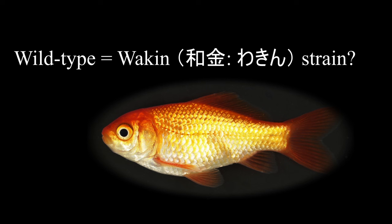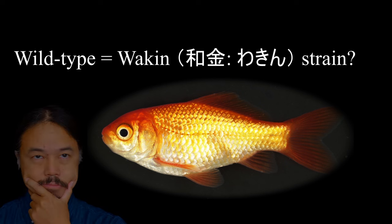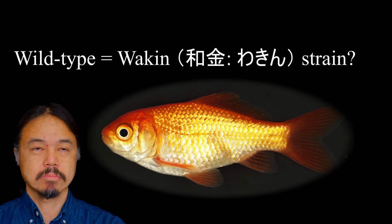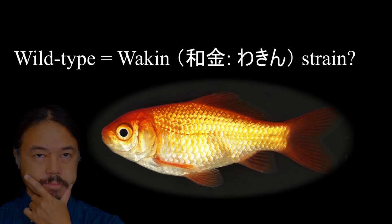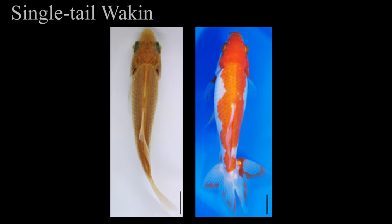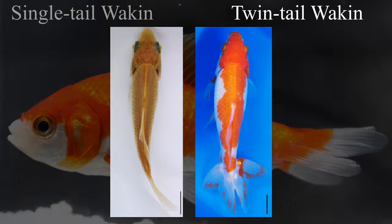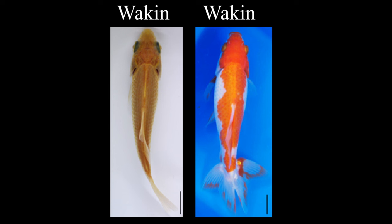Many of you may be wondering: is the wild type goldfish the same as a wakin? In some ways, yes — the wild type is equivalent to the wakin. At first I thought it was appropriate to use wakin to indicate the wild type. However, there are different caudal fin morphologies in the wakin strain. There are single tail wakin and twin tail wakin, and even different strains of twin tail wakin. Therefore, simply calling them wakin does not provide any information about the caudal fin morphology.